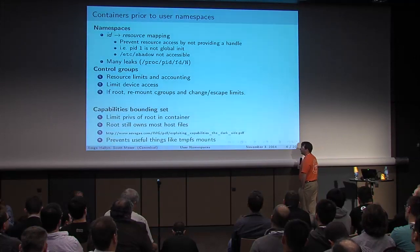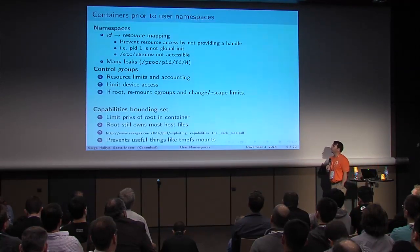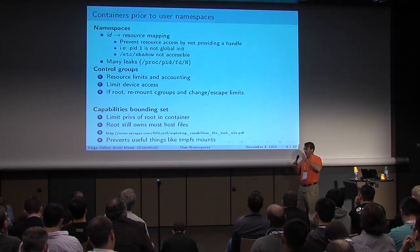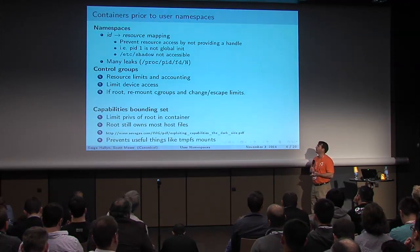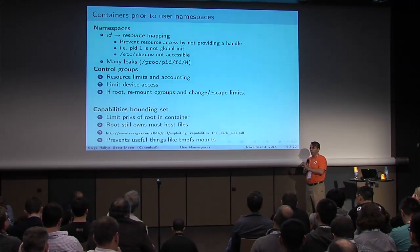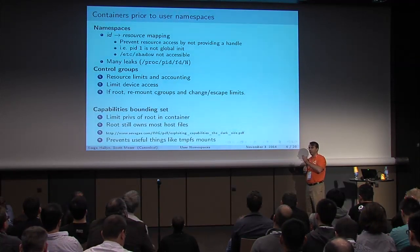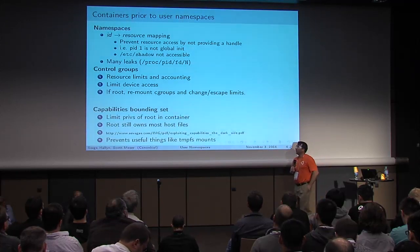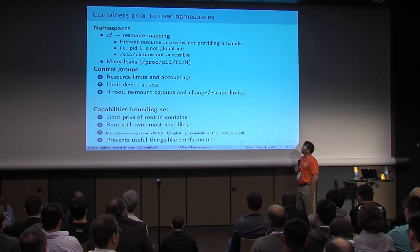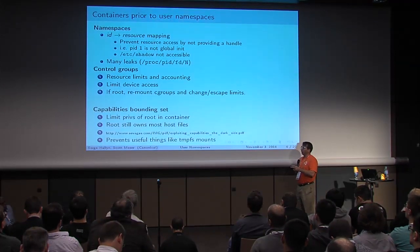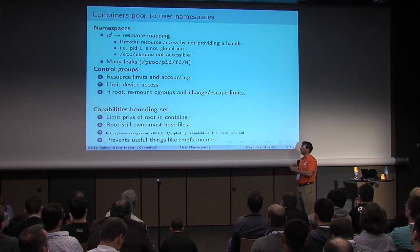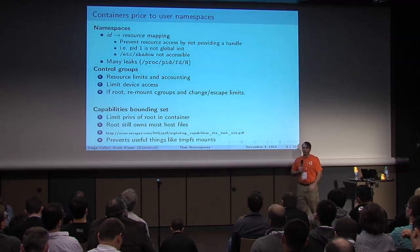Control groups (cgroups) appeared in 2007. They group tasks together and allow you to account for and limit resource usage. Special cgroup types like the devices cgroup let you say a group cannot access a specific device. However, without a user namespace, root inside the container is root on the host. If it can remount the cgroup filesystem, it can simply move itself back into a control group where it isn't constrained.